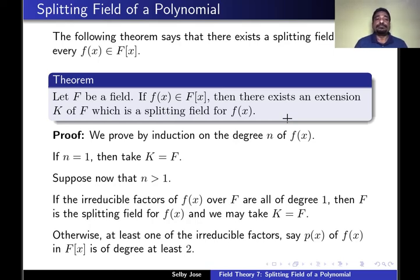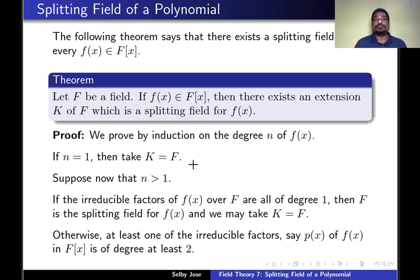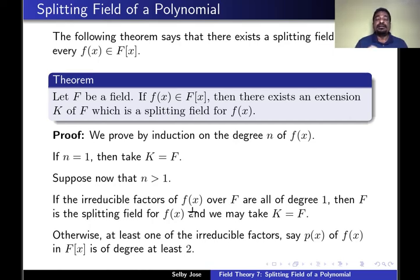We prove this theorem by induction on the degree of f(x), say n. When n = 1, the degree of f(x) is 1, meaning all coefficients are in f, so f itself is the splitting field. Suppose n > 1. If all the irreducible factors of f(x) over f are of degree 1, then f(x) splits completely over f as (x - alpha₁)···(x - alphaₙ) where each alphaᵢ is in f, and f itself is the splitting field.